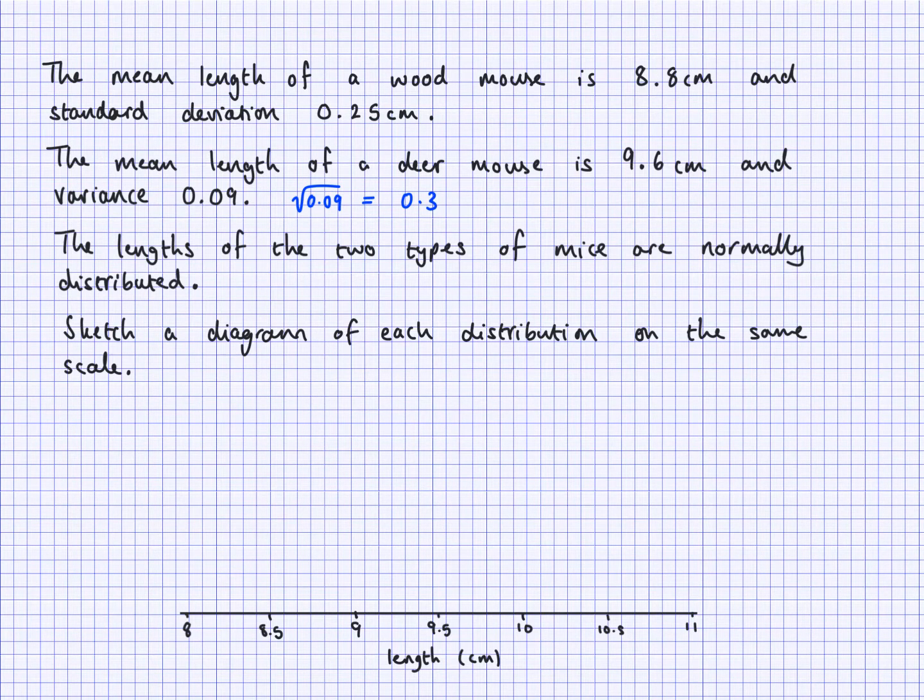Now, if the standard deviation is quite large, it means the data is more spread out, so the bell shape would be more flattened. If the standard deviation is very narrow, so this one is smaller than this one, this one would have a bell shape that appears a little bit higher than the one for deer mice. So let's go for wood mice first.